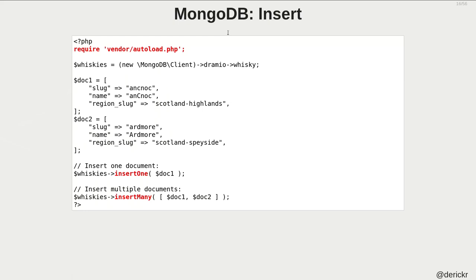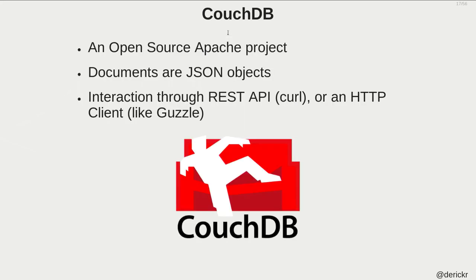This is the PHP example showing how insertion works. You create a connection to a database and a collection. We insert two documents — simple PHP arrays treated as key-value pairs — using `insertOne` for a single document and `insertMany` for multiple. It's not particularly difficult and works similarly across all languages. MongoDB and CouchDB also don't require you to create a database first; it gets created automatically, which is handy.